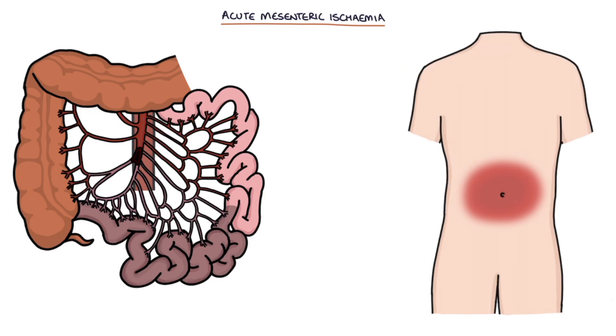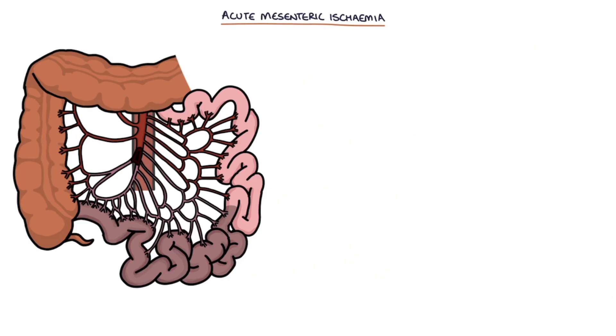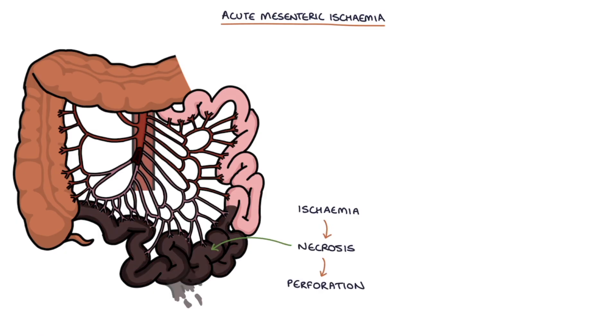Acute mesenteric ischemia presents with acute non-specific abdominal pain. The pain is disproportionate to the examination findings. Patients can go on to develop shock, peritonitis and sepsis due to the acute bowel ischemia. Over time the ischemia to the bowel wall will result in necrosis of the bowel tissue and perforation of the bowel.